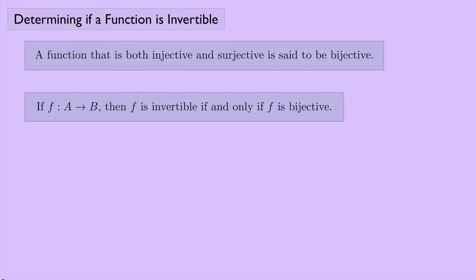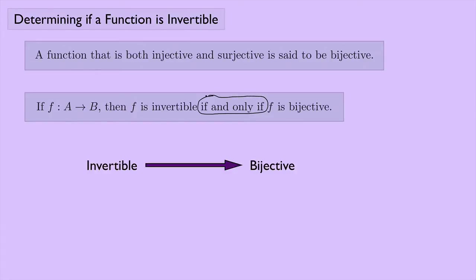The claim is that if a function F goes from a set A to a set B, then F is invertible — meaning it has an inverse — if and only if F is bijective. Since we have an if-and-only-if statement, it works in both directions: if F is invertible then it's bijective, and if it's bijective then it's invertible.